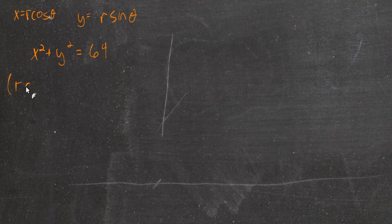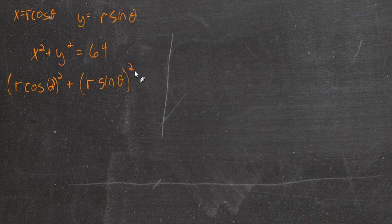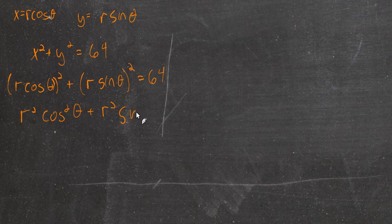So let's go about doing that. Now, x is going to be r cos θ. We're going to square that plus y is r sin θ. We're going to square that. That's equal to 64. We've just made that substitution. Now we'll solve for r, if at all possible.